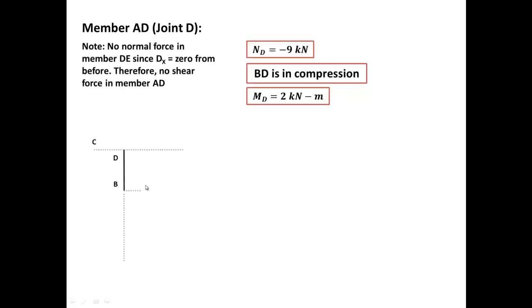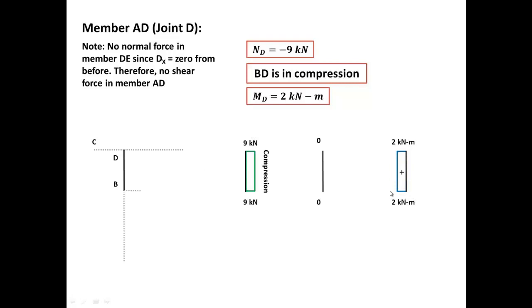Now for member DB — looking at joint D. We have ND which is 9, and we said before that BD is in compression. So the normal force is 9 kN in compression. It doesn't have any shear forces, but it has a moment equal to 2, and that's how we draw it — it's 2 here, 2 here, 2 here, all the way up.